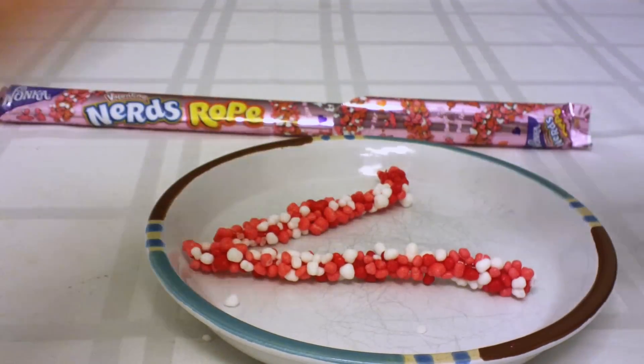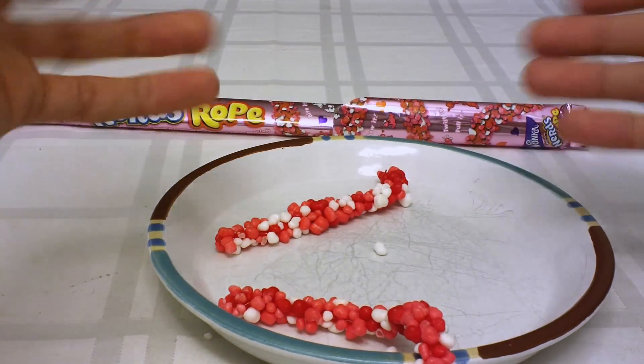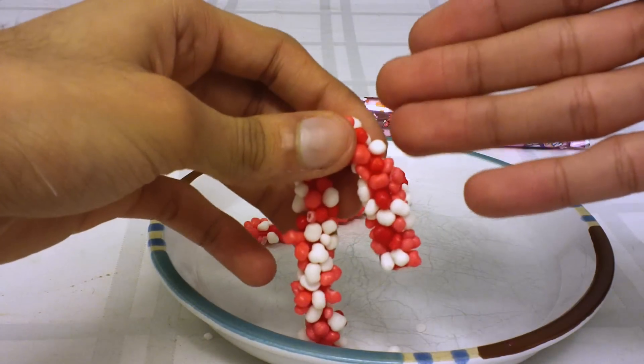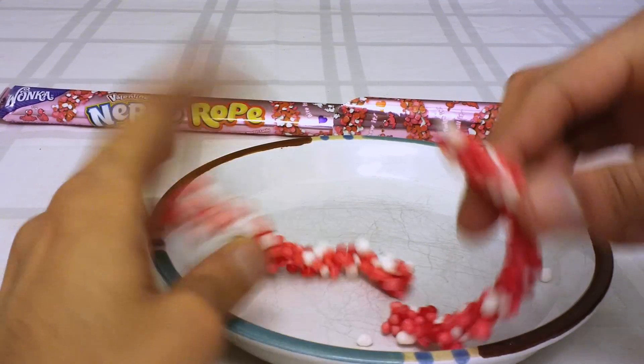The great thing about the Nerds Rope is how incredibly sugary it is. When you take basic Nerds, which are basically just pure sugar anyway, and combine them with the gumminess that is a rope, you get a delightful teeth-eroding treat. Now wrap your lover up and show them some fun.